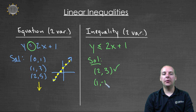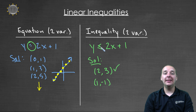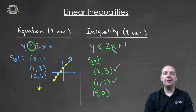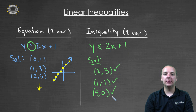How about (1, -1)? One times two is two, two and one make three, and negative one is less than three — so that'll work. How about (5, 0)? Two times five is ten, ten and one make eleven, and zero is less than eleven — that's a solution.